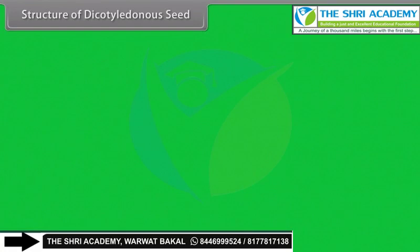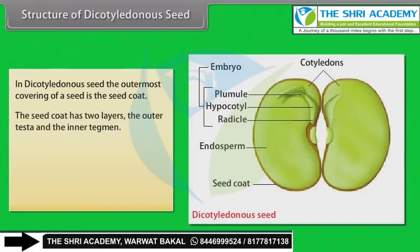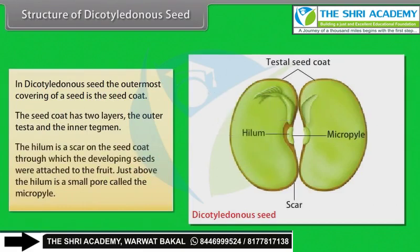Structure of Dicotyledonous Seed: In a dicotyledonous seed, the outermost covering is the seed coat. The seed coat has two layers — the outer testa and the inner tegmen. The hilum is a scar on the seed coat through which the developing seeds were attached to the fruit. Just above the hilum is a small pore called the micropyle.